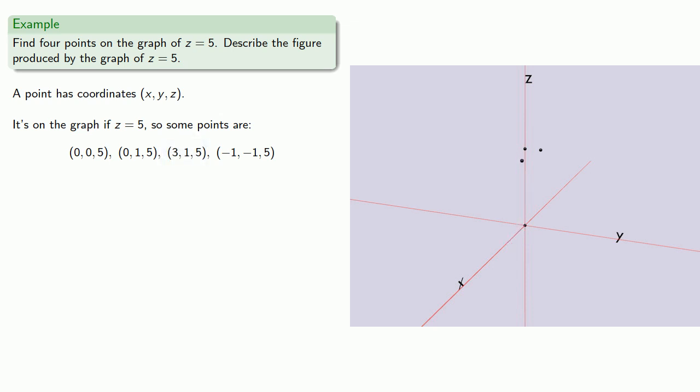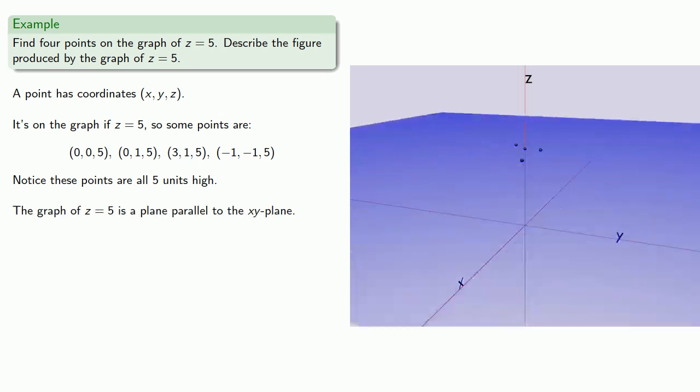Negative 1, negative 1, 5, that's negative 1x, negative 1y, and 5 vertical. The thing to notice here is that no matter where we go along the x or y axis, we always end up by going upward by 5 units. And so notice that these points are all 5 units high, and that suggests that the graph of z equals 5 is a plane parallel to the xy plane.